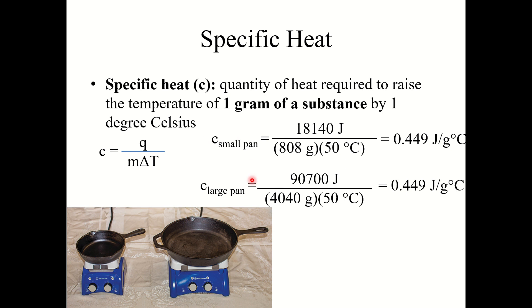So here if you look, c small pan. So you've got heat, you've got the mass of that small pan, and the temperature change. When you calculate this for the large pan, again it's the amount of heat that was required, the temperature change, and the mass of that pan.